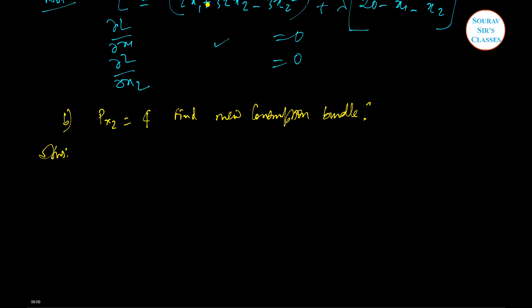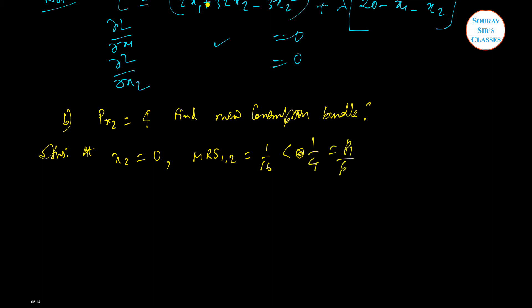For the new problem, the solution is not at the corner x2 equal to 0, because MRS at that point is 1/16, which is less than 1/4, the new price ratio. Therefore it pays to move some money toward x2.